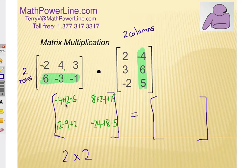Negative 4 plus 12 is 8, take away 6 is 2. 8 plus 24 plus 15, which would be 47. 12 minus 9 is 3, plus 2 is 5. And negative 24, take away 18, take away 5, is negative 47.